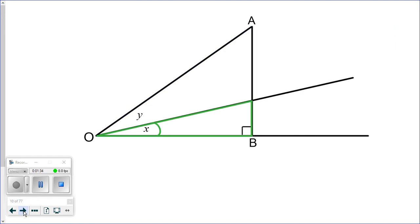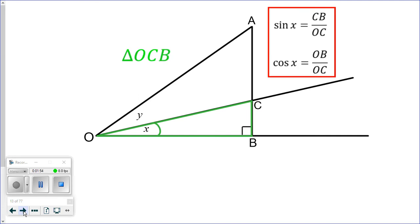And then if we further look, we also have a right-angled triangle that contains only angle x, which means we can probably talk about sine x and cos x, which means we do need to also label this point, I'll call it C. That point now gives us triangle OCB. And again, angle x is in triangle OCB. And because it's a right-angled triangle, we can now say that sine x can be equal to CB over OC, and cos x is OB over OC.